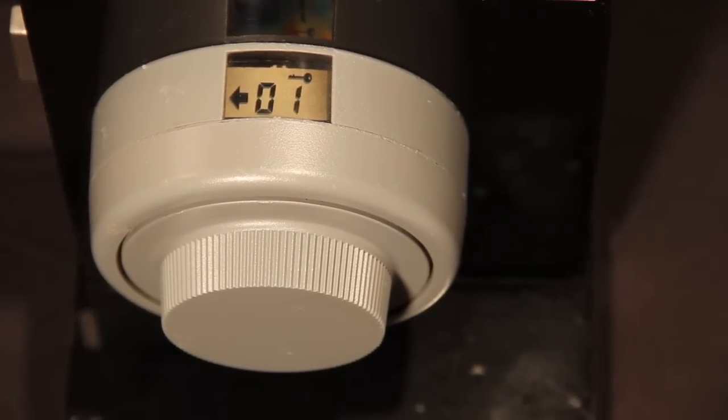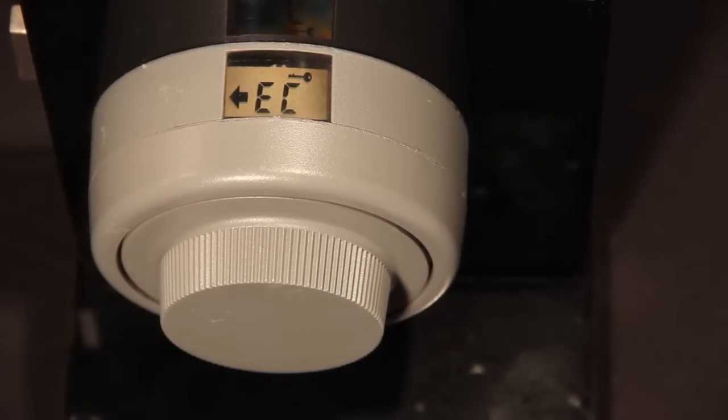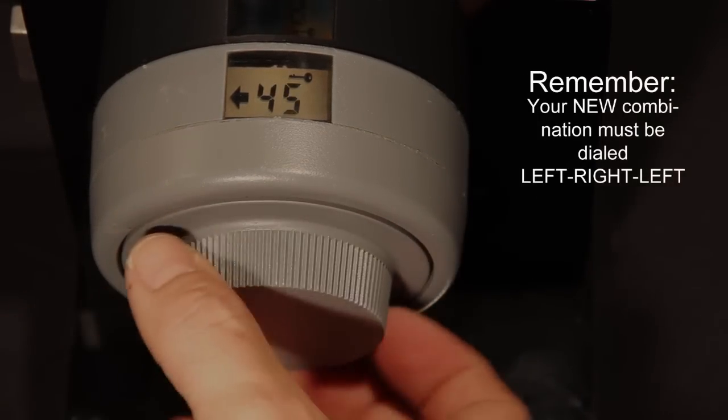Next, dial right until the letters EC, Echo Charlie, appear on the viewing screen. Once the EC appears, you are now ready to enter your new combination.